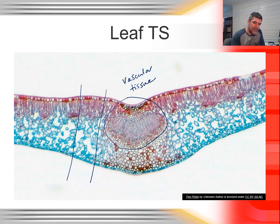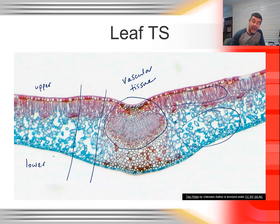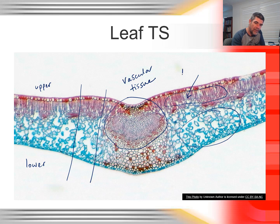One thing I notice very quickly is a region of cells that are quite loosely distributed with lots of spaces between them, and another group of cells that are much more organized, columnar, and regular. This is a nice indication that the sample has been prepared with the upper surface of the leaf to the top of the slide and the lower surface to the bottom. Those columnar, well-organized cells with not a lot of space between them are what we've called the palisade mesophyll.